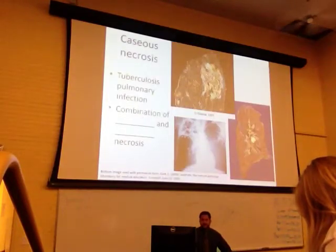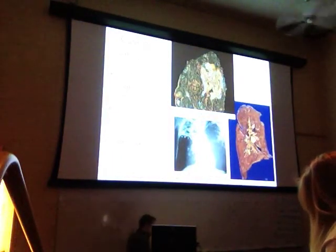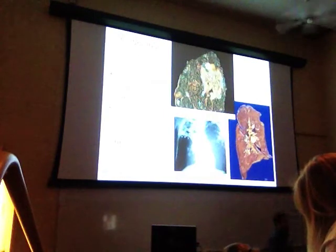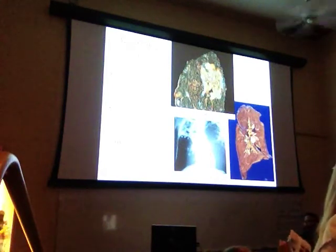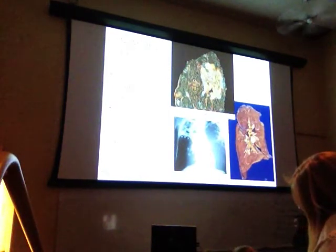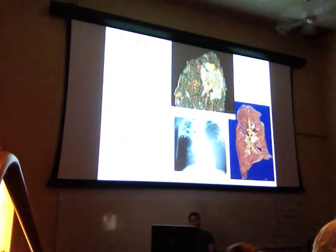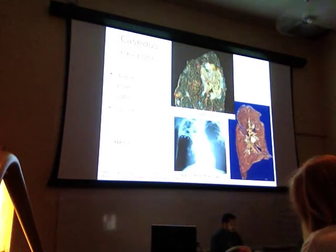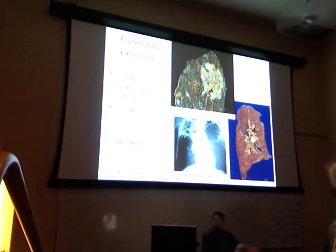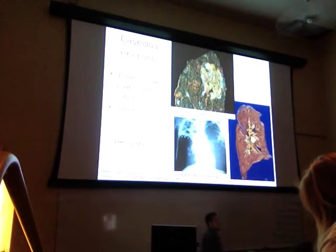Next up is caseous necrosis. It's very common to see caseous necrosis in tuberculosis infections, primarily at the level of the lungs — pulmonary infections. It's kind of a combination between coagulative and liquefactive necrosis. You're going to see pus forming, but because of the architectural organization of the lungs, you might see a defined structure — not wedge-shaped, so it's not completely coagulative, but it has coagulative-like characteristics.